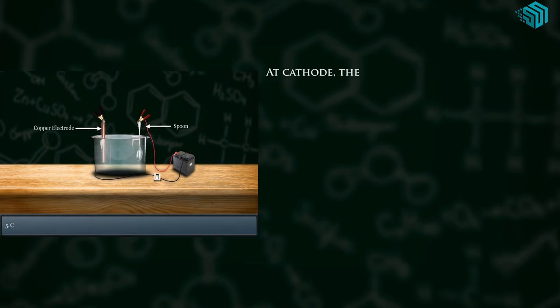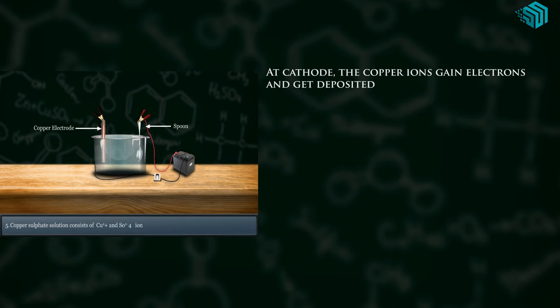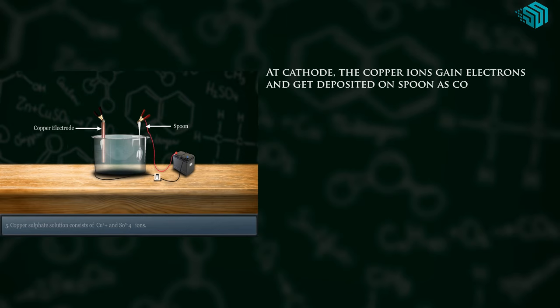At the cathode, the copper ions gain electrons and get deposited on the spoon as copper metal.